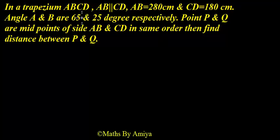The question is in front of you. In a trapezium ABCD, AB is parallel to CD, AB is 280 cm and CD is 180 cm. Angle A and B are 65 and 25 degrees respectively. Point P and Q are midpoints of side AB and CD in same order, then find distance between P and Q.